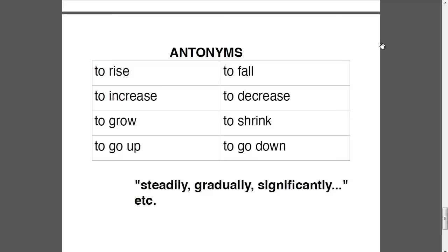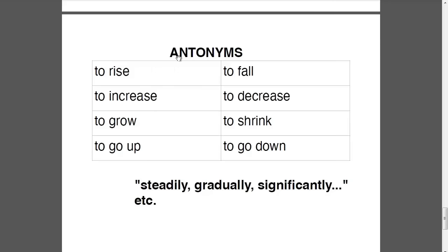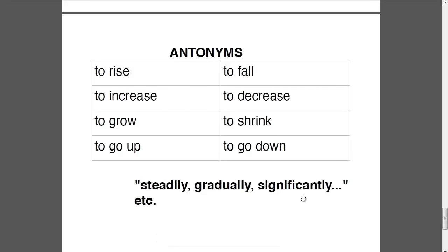To rise / to fall, to increase / to decrease, to grow / to shrink, to go up / to go down. And of course you can embellish these verbs with adverbs: steadily, gradually, significantly. For example: steadily increasing, gradually decreasing, significantly falling or rising. You can do anything you want with these verbs.